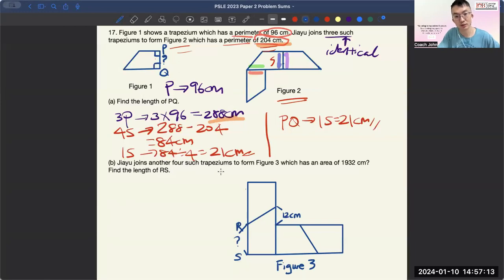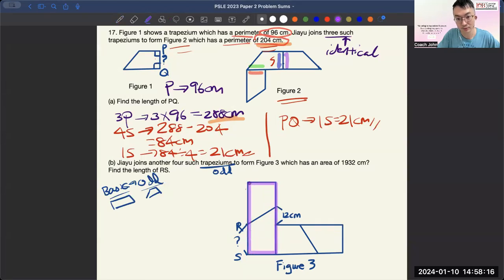Moving on, CJ joins another 4 such trapeziums to form figure 3, which has an area of 1932 cm squared. In this case, trapezium is an odd shape to most primary sixes because they are not very familiar with it. So we call this odd shape. And rectangle is something that is more familiar. So we call them basic shape. So in this question, we have a technique in LOB called the BO, not body odor, but it stands for basic shape to find odd shape. So what's the basic shape here? It's a rectangle to find the trapezium. You hardly hear children using trapezium, probably just one or two questions, but not like how they assemble into a unique figure. So with this in mind, the basic shape that we have here is actually a rectangle.